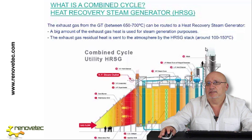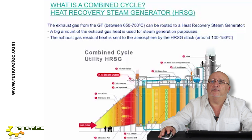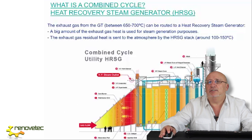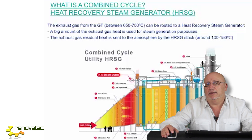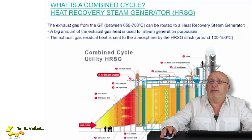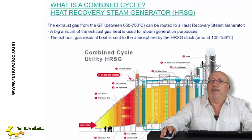The flue gas at the stack exit could be between 100 and 150 degrees Celsius, depending on the conditions and the fuel. For example, in the case of natural gas we prefer around 100°C, and in the case of crude oil we prefer 150°C. This is because of the condensation — the dew point of the flue gas — especially related to sulfuric acid.